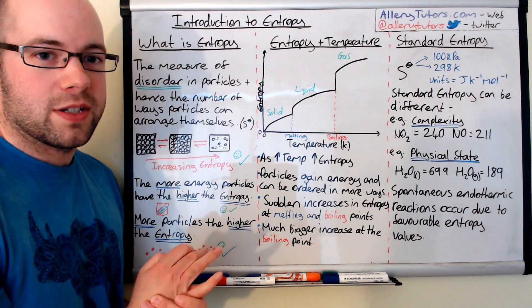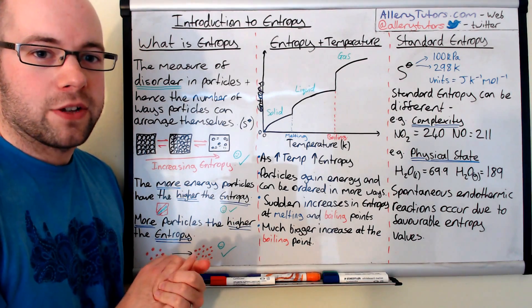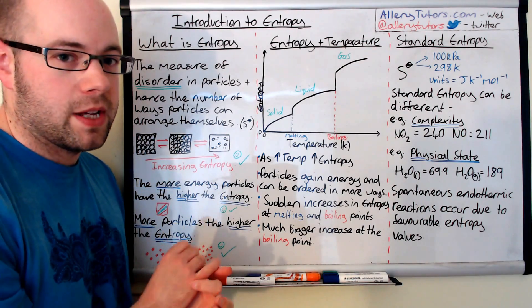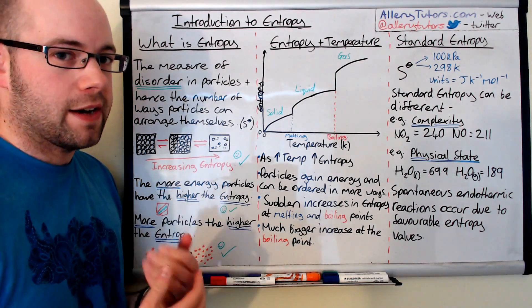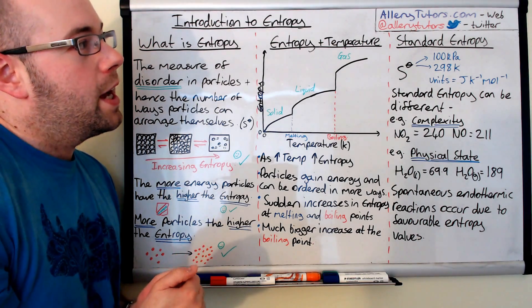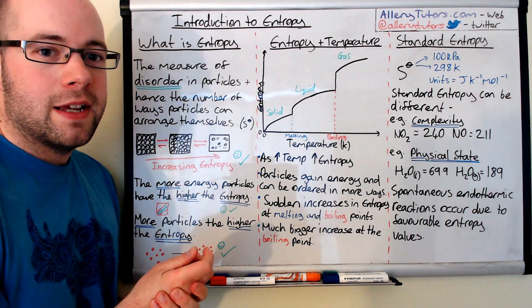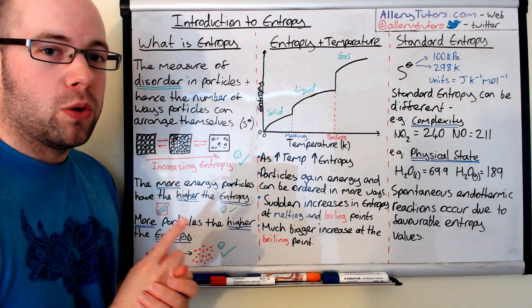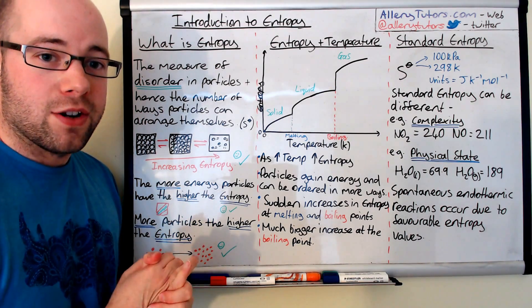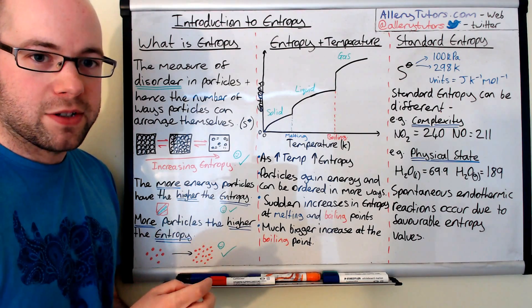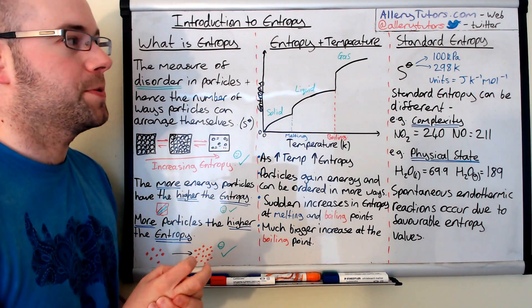The units we use for entropy are joules per Kelvin per mole. When we do calculations in the other videos in this playlist, you'll see why that's really important, because sometimes they don't give you your energy in joules, sometimes they give it in kilojoules, and you'll have to change the units. Entropy is basically the measure of one mole of substance, and all the values you'll see in the data table are the entropy value for one mole of that substance. That's really important.